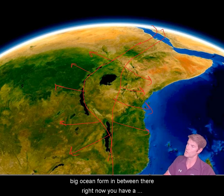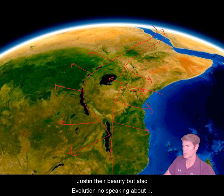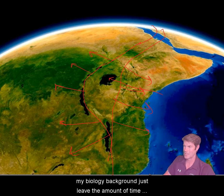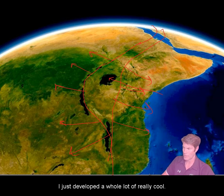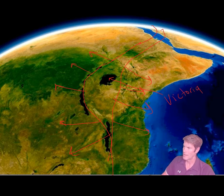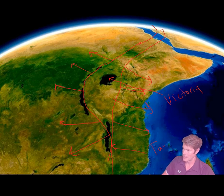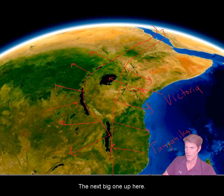Right now you have these huge lakes in Africa — just amazing in their beauty, but also in terms of evolution. Because of how long fish species have been living in those lakes, they developed really cool colors. The most famous one is Lake Victoria. This one at the bottom is Lake Tanganyika, probably the biggest one by volume. I think I had it mistaken — this one down here is Malawi.